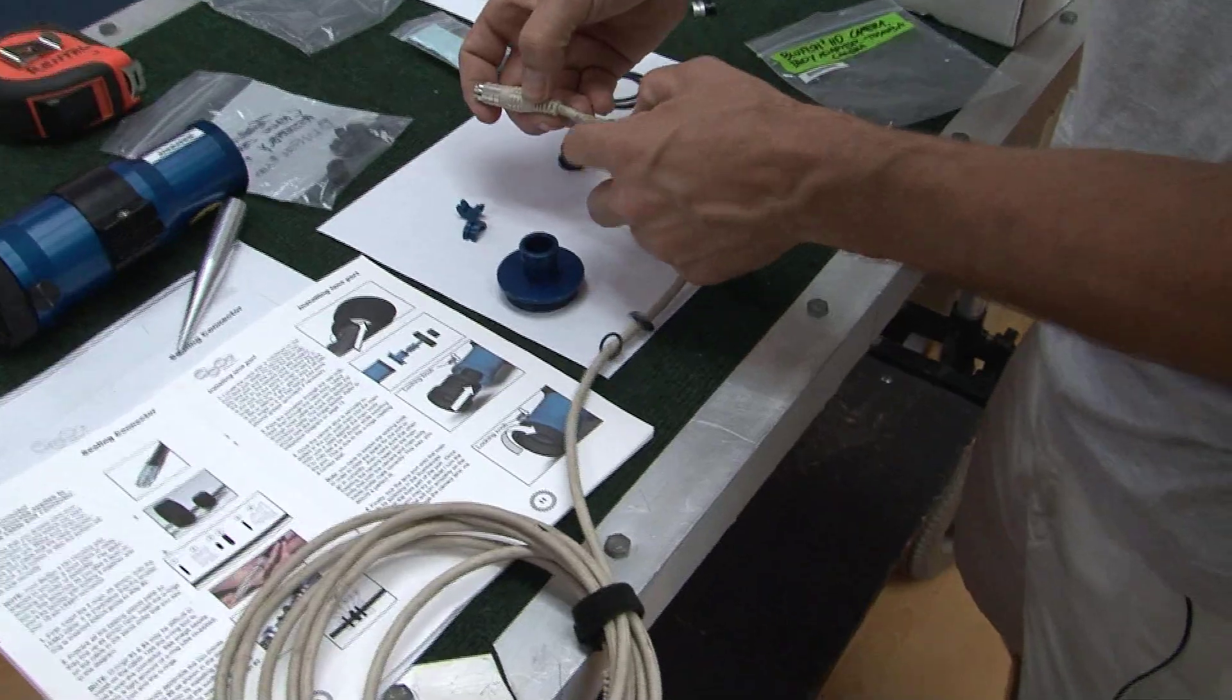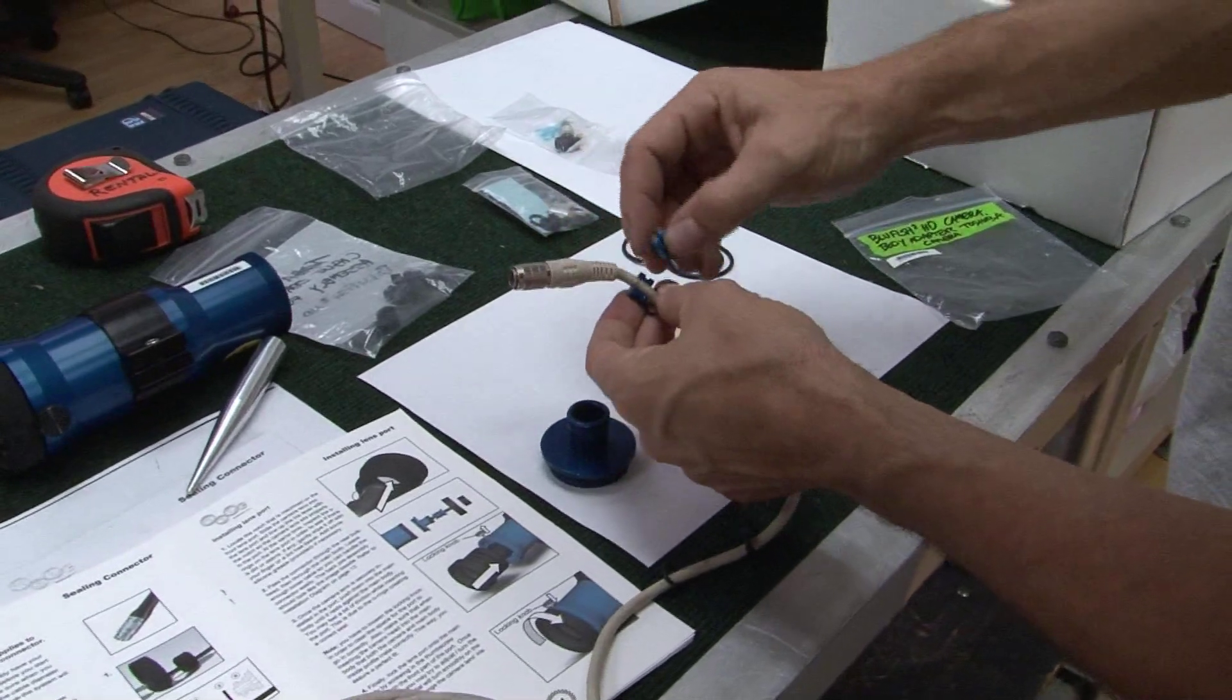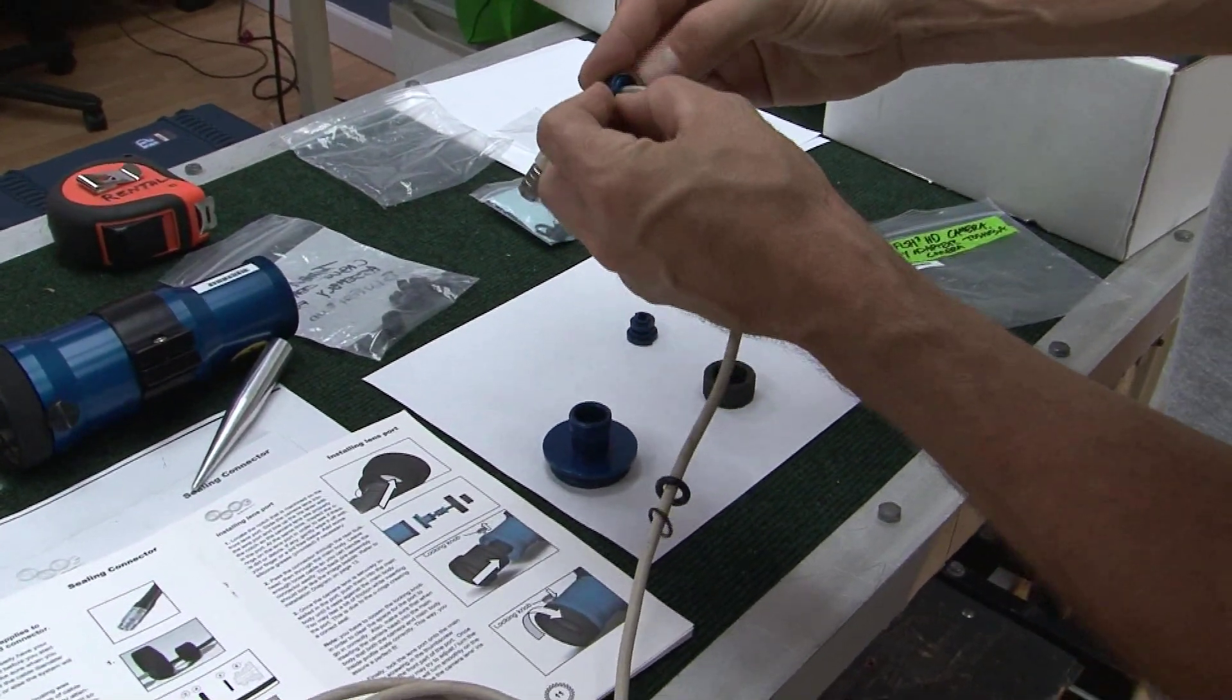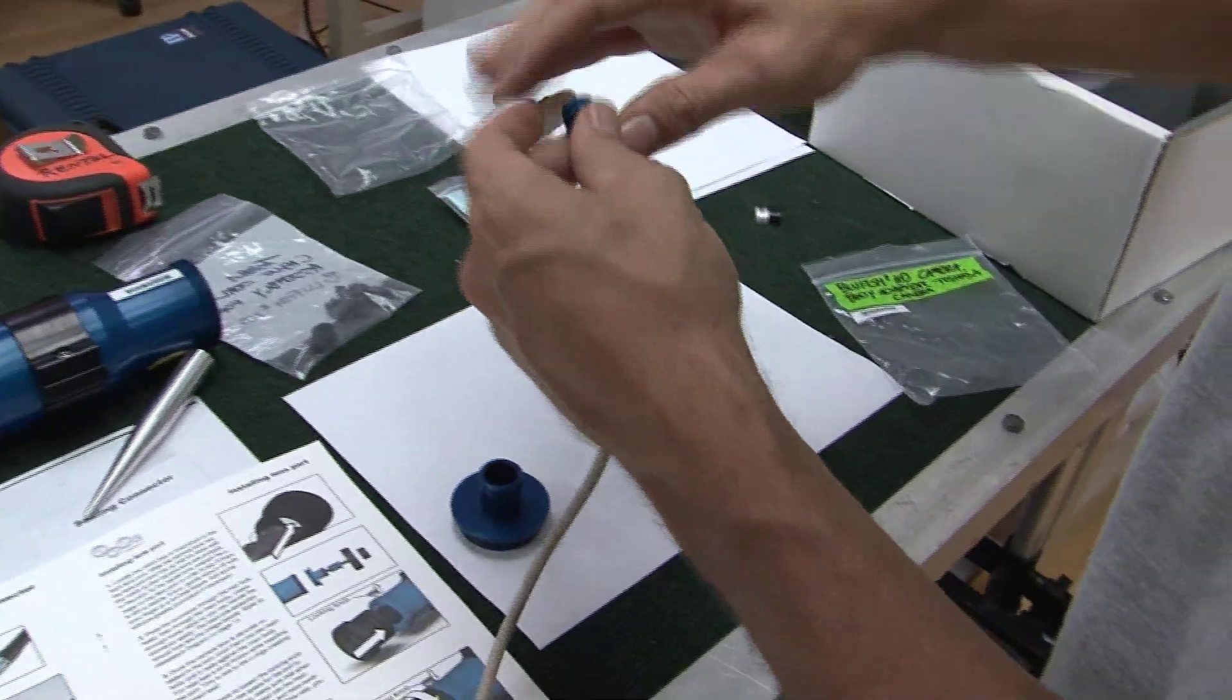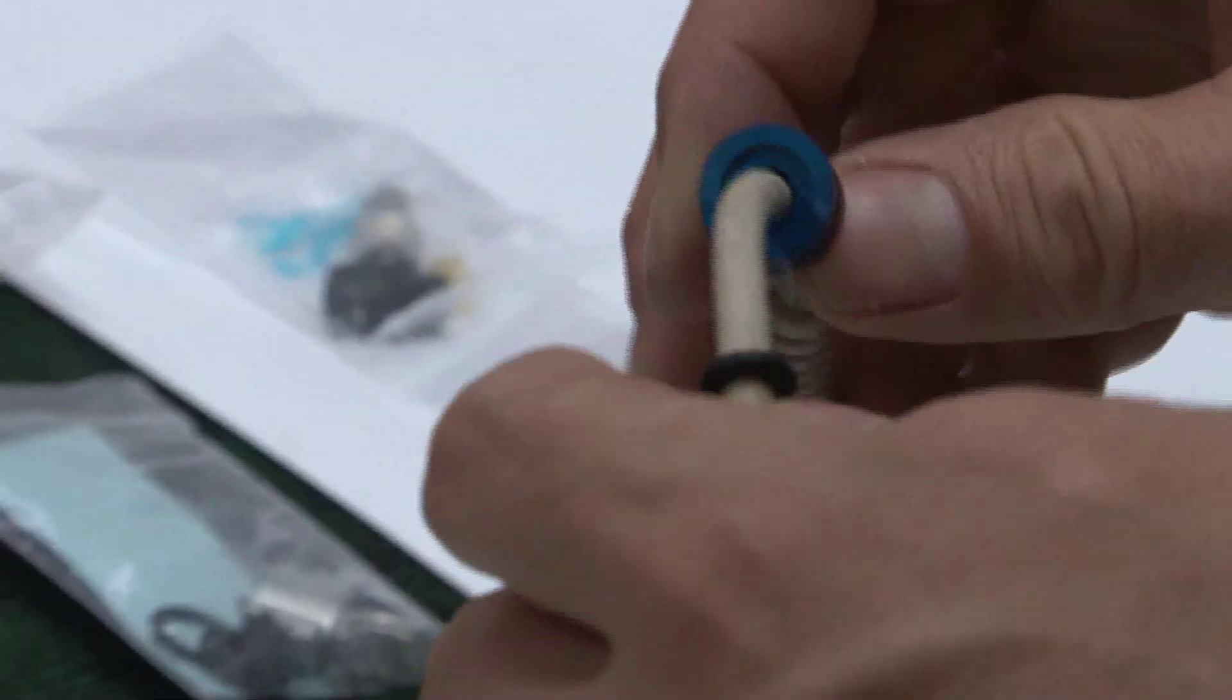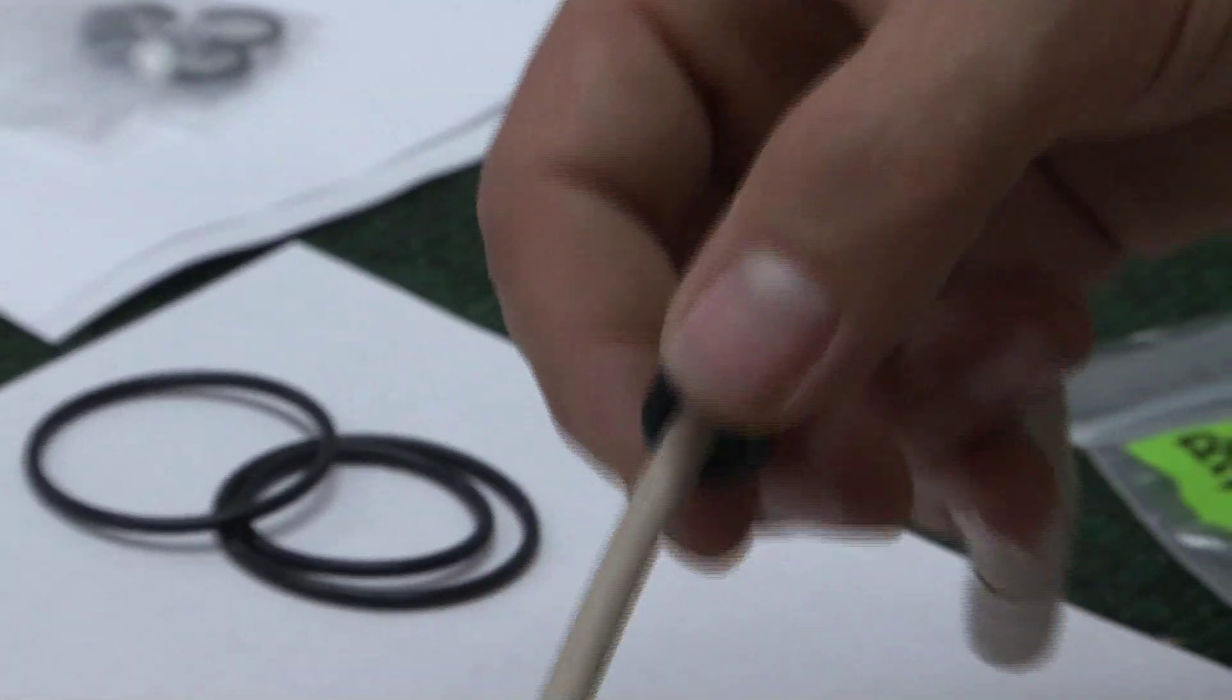All right. Now, we have all the O-rings on. Now, I'll be taking our first assembly. You want to make sure that we put the indention away from the fitting. As you can see, the O-ring slides right into there. The next O-ring will fit right on the outside. This is to help to make it seal.